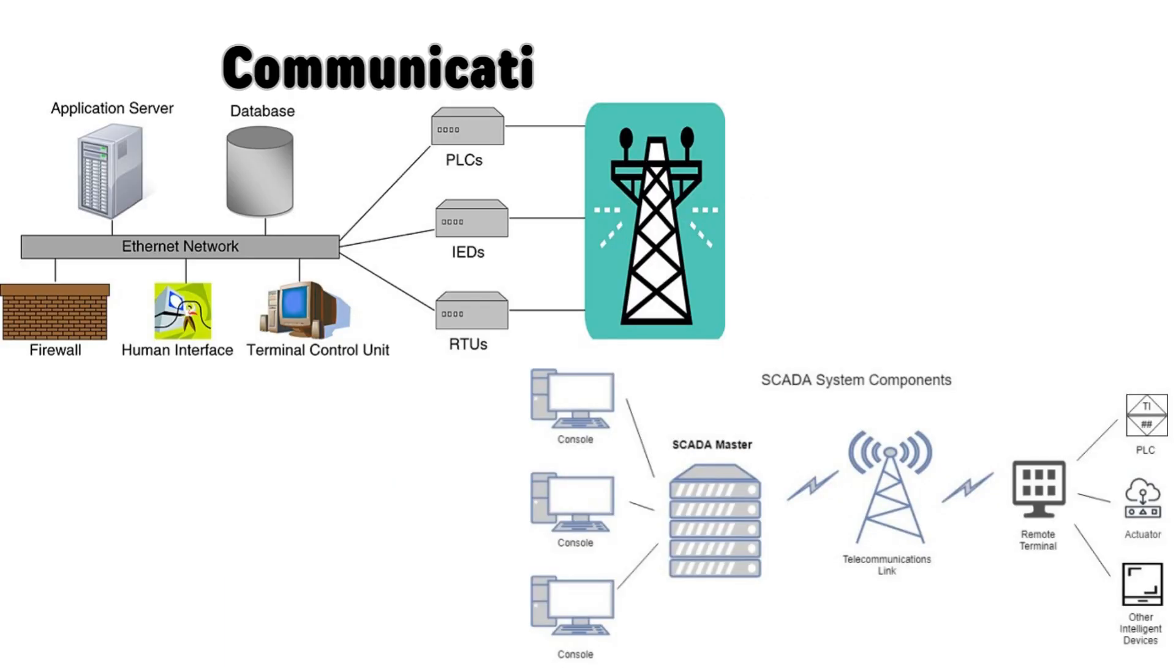Communication infrastructure. SCADA systems rely on communication networks to transmit data between the remote devices and the central SCADA system. This can be done using wired connections, such as Ethernet or serial communication, or wireless technologies, such as radio or cellular networks.